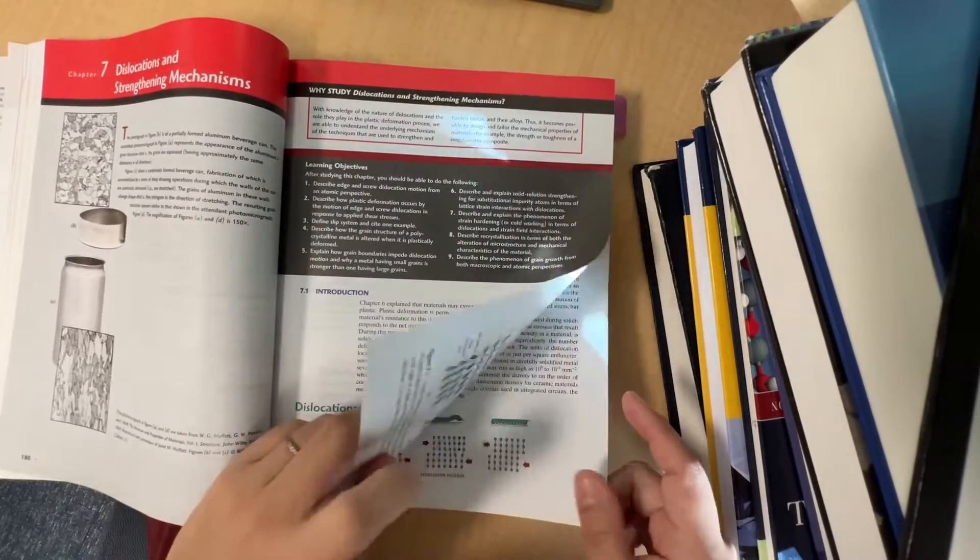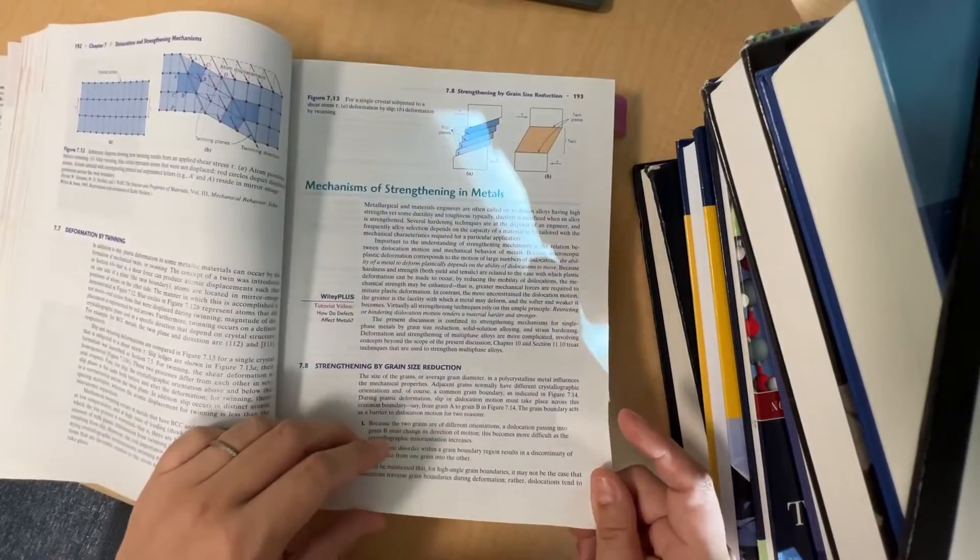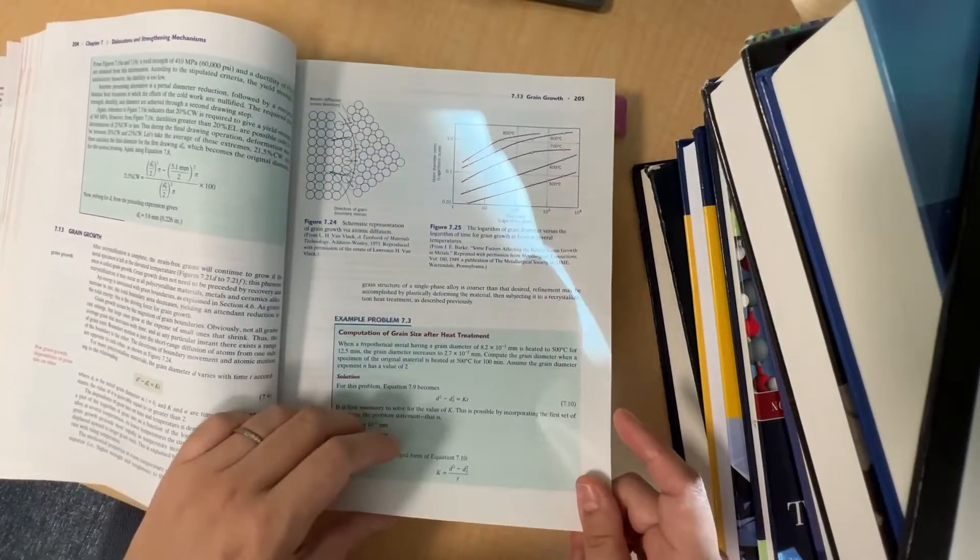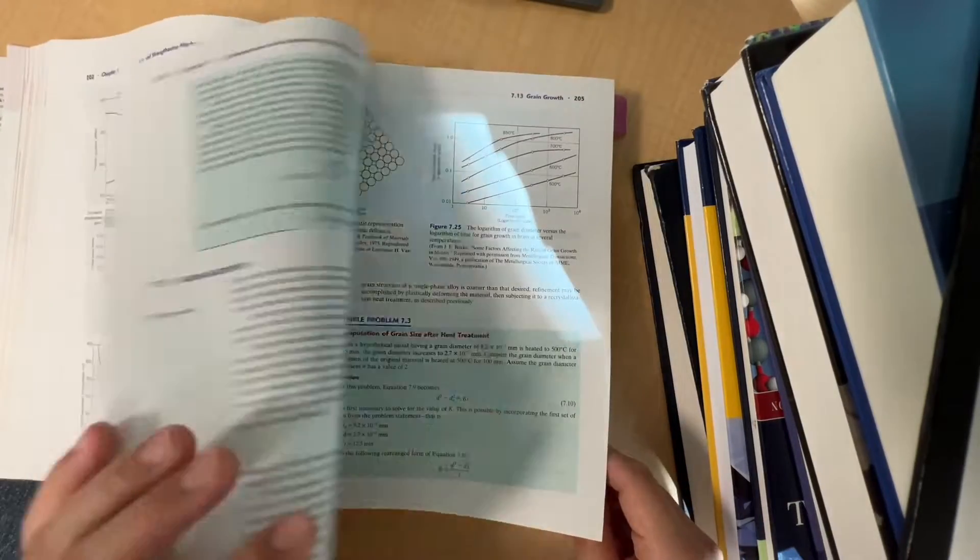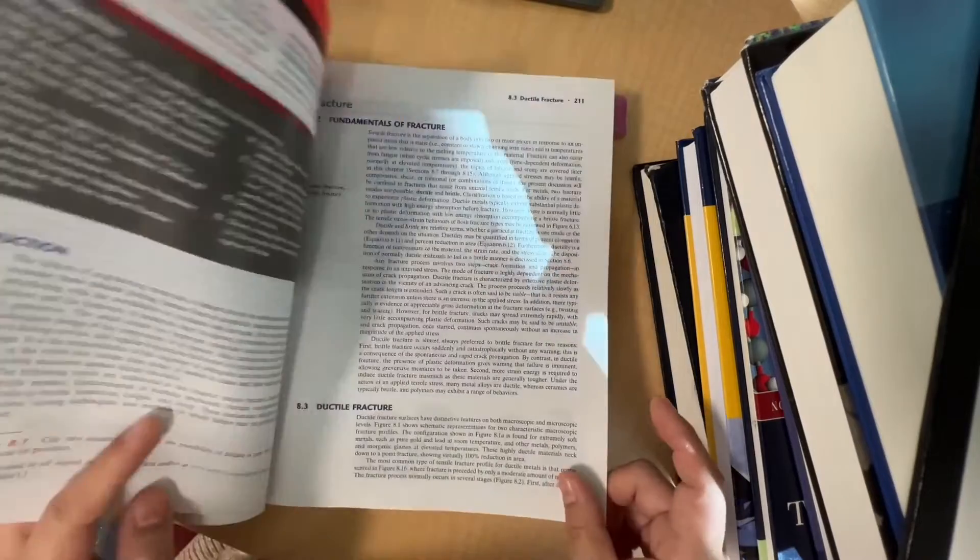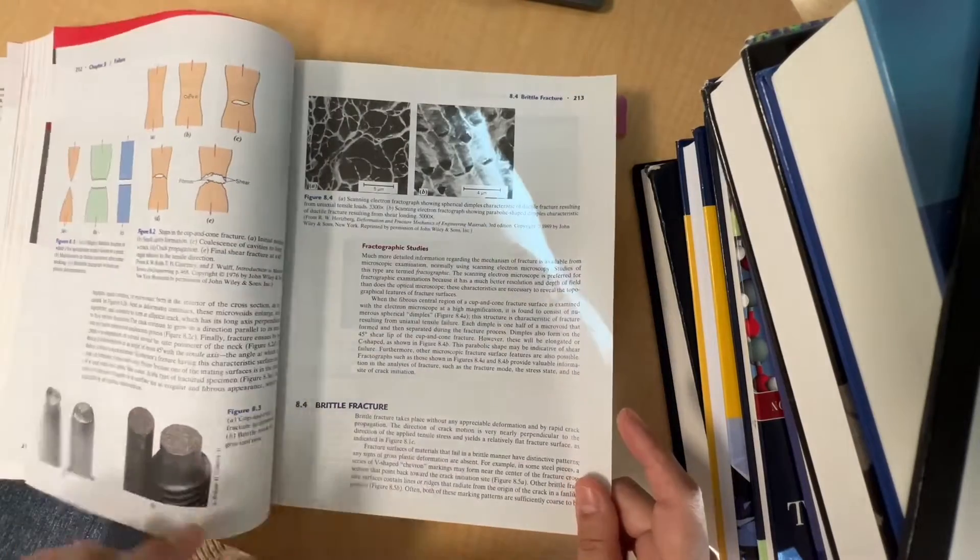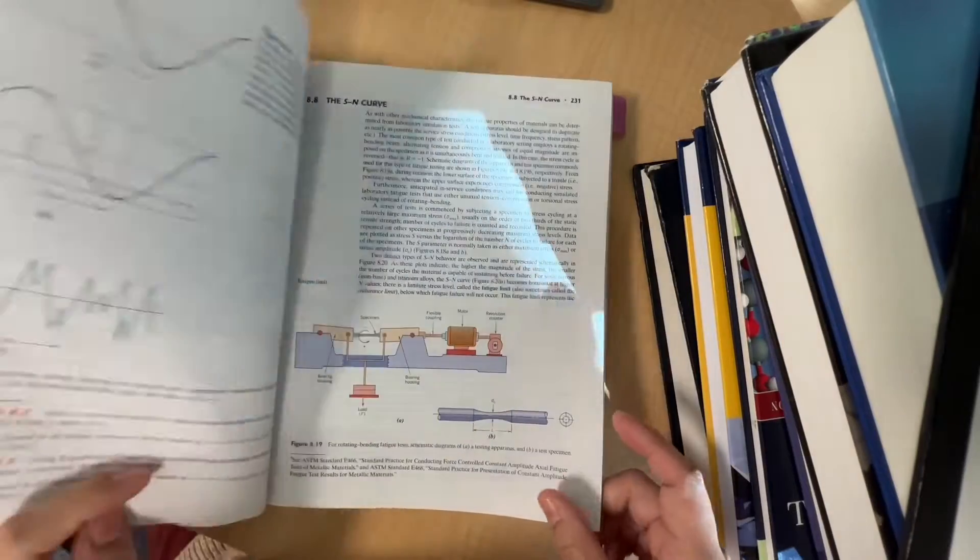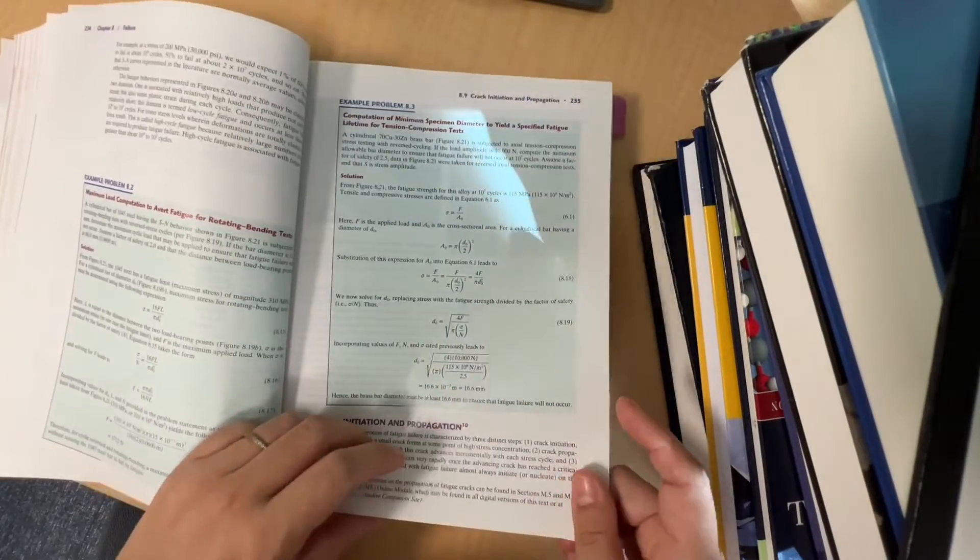Chapter seven about dislocations and strengthening mechanisms defines what is the slip system and Schmid's law, so what is the Schmid factor, and then the microstructure evolution during heating and annealing. Failures: three failure types—fracture, fatigue, and creep. Shock impact tests, S-N curves for fatigue.